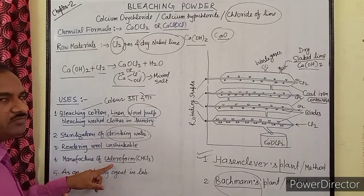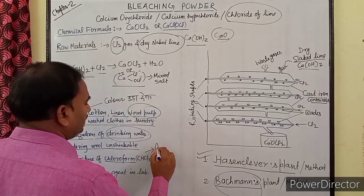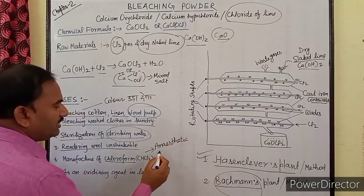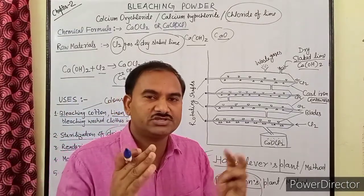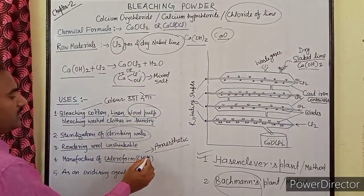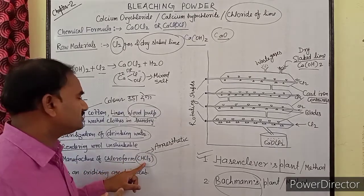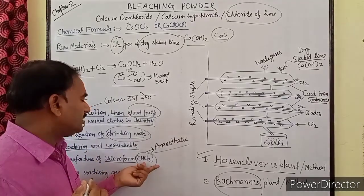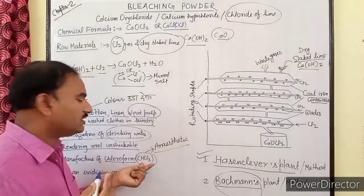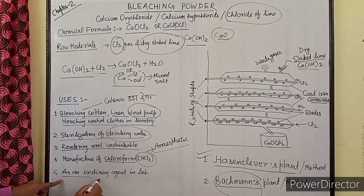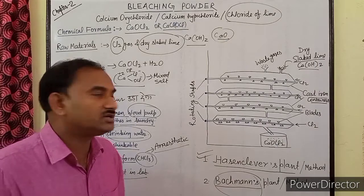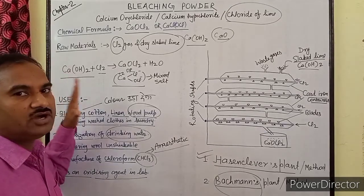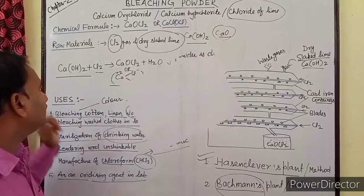Manufacture of chloroform: chloroform एक बहुत important chemical है जिसका उपयोग anesthetic के रूप में किया जाता है। Anesthetic का मतलब है किसी को बेहोश कर देना। प्राचीन काल में surgery में इसी को anesthesia के रूप में उपयोग किया जाता था, लेकिन अब यह उपयोग नहीं होता क्योंकि यह घातक है। Next is as an oxidizing agent in the laboratory — bleaching powder nascent chlorine generate करता है जो किसी chemical को oxidize करने के काम आती है।